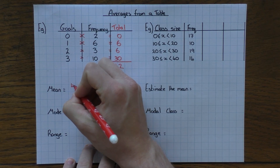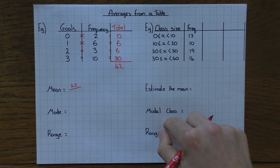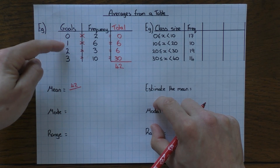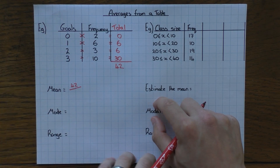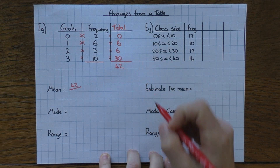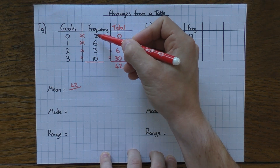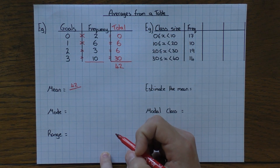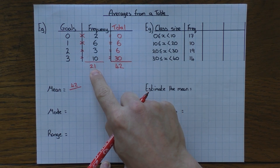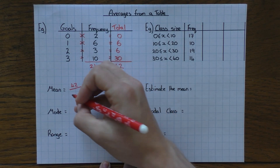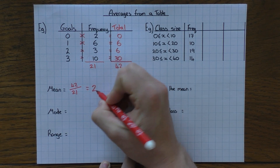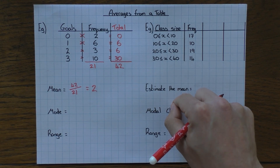To find the mean, add up all the individual row totals: zero plus six plus six plus 30 gives us 42 goals in total. Then, just like with the mean from a list of numbers, divide by how many there are. Don't divide by four — the frequency tells you how many, so add up the frequencies: two plus six plus three plus ten gives you 21. So 42 divided by 21 equals two — the mean number of goals is two.